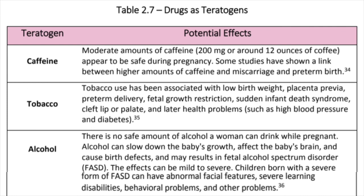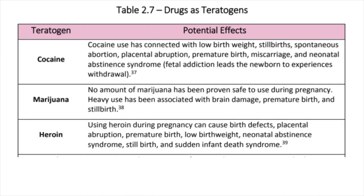Alcohol: there is no safe amount of alcohol a woman can drink while pregnant. Alcohol can slow down the baby's growth, affect the baby's brain, and cause birth defects, and may result in fetal alcohol spectrum disorder (FASD). The effects can be mild to severe. Children born with a severe form of FASD can have abnormal facial features, severe learning disabilities, behavioral problems, and other problems. Cocaine use has been connected with low birth weight, stillbirths, spontaneous abortion, placental abruption, premature birth, miscarriage, and neonatal abstinence syndrome. Fetal addiction leads a newborn to experience withdrawal.